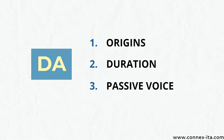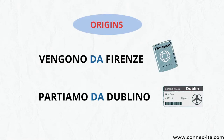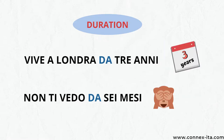Let's move on to the next one, which is 'da'. You can use this preposition to talk about origins, a period of time, or with the passive voice for saying who's done an action. For example, 'Vengono da Firenze' — they are from Florence. 'Partiamo da Dublino' — we are leaving from Dublin. Here 'da' is in front of the place from where you are coming. 'Vive a Londra da tre anni' — he's been living in London for three years. 'Non ti vedo da sei mesi' — I haven't seen you in six months. In these sentences, 'da' is before a period of time and tells you about the duration.